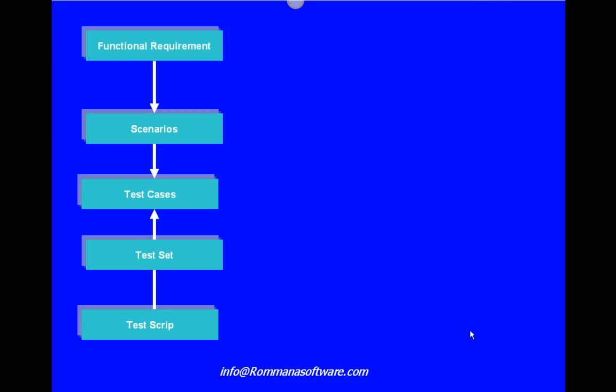To start, a requirement is always needed in order to be able to design tests. A requirement is simply a statement describing any behavior or functionality that someone expects of the system. A requirement can come at any level of detail — the more detail we have, the easier it is to test. Because requirements will never be complete or as testable as we want, this methodology works with requirements at any level of detail. For example: 'Customers shall be able to place orders online' or 'Customers shall be able to cancel their orders online.'